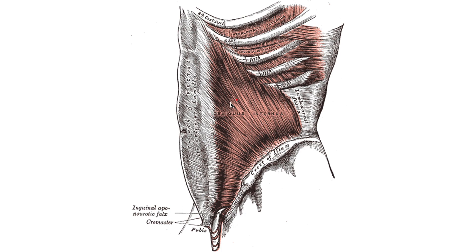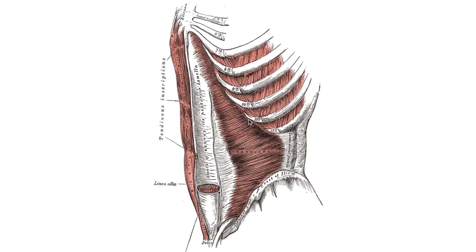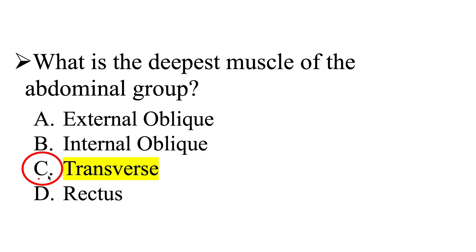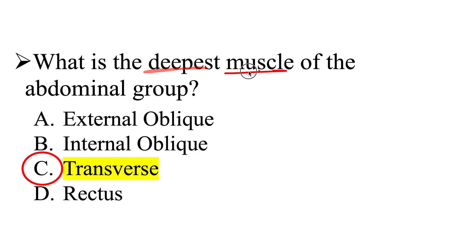Right underneath the internal obliques we have the transverse abdominal muscle, which is going to be the deepest and most innermost abdominal muscle. Its muscle fibers run horizontally across the abdomen. So the correct answer is the transverse abdominis — the deepest muscle of the abdominal group.